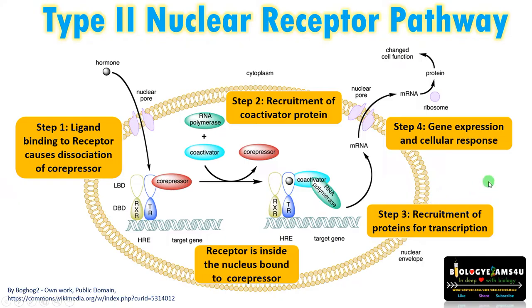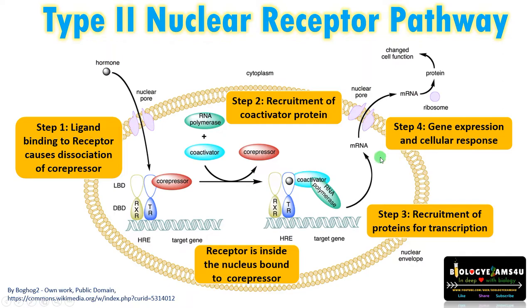In summary, the type 2 nuclear receptor pathway: the receptor is inside the nucleus, bound to a core repressor. Upon hormone or ligand binding, the core repressor is detached. Coactivator proteins are recruited, followed by all other proteins required for transcription — including RNA polymerase — which bind the hormone response element. This causes expression of downstream genes, forming mRNA and finally protein, leading to a change in cellular response.